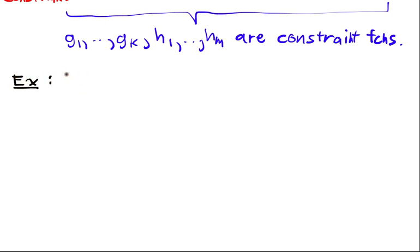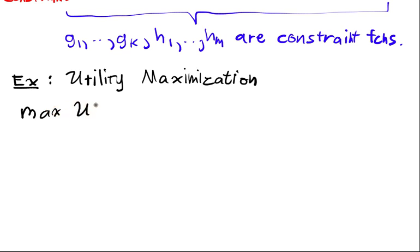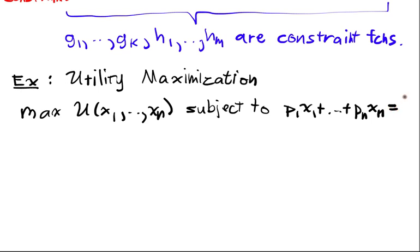For example, we have utility maximization. In utility maximization, we want to maximize some utility function of some bundle of goods, subject to the price of good one times the amount of good one, plus all the prices up to price n times good n, is equal to our income i.